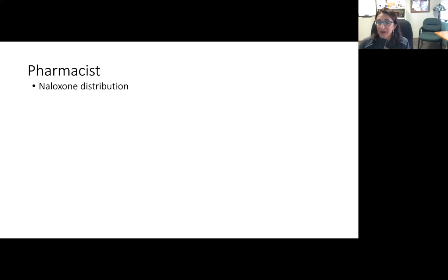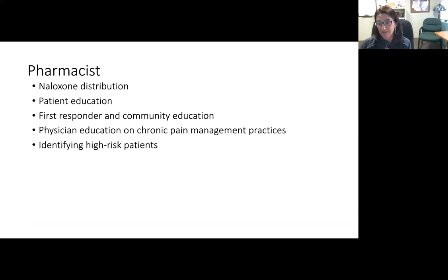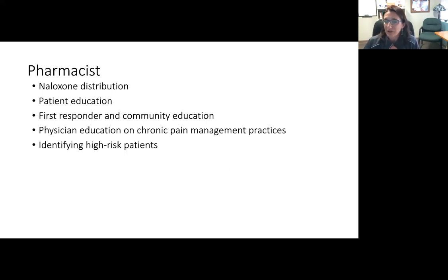A pharmacist may be part of the treatment team at some sites. This person would be responsible for naloxone distribution, providing patient education, first responder community education, and educating providers on appropriate chronic pain management. They can help identify high-risk patients. Having communication with your pharmacist is key — pharmacists often see important flags coming up from prescriptions and can notify the team. Co-prescription of naloxone is also a key function.